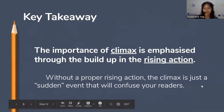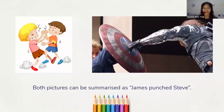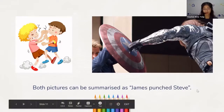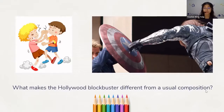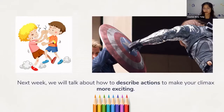That's your key takeaway for this class. For next class, look at the two pictures on the screen. Both can be summarized as 'James punches Steve.' One is the example we just saw; one is from a Hollywood blockbuster — Captain America: The Winter Soldier — that earned millions of dollars. What exactly makes the difference between that movie and our usual composition? How can we write our composition in the style of a good action movie that really engages our readers? We'll talk about this next week as we learn how to describe actions to make your climax more interesting.